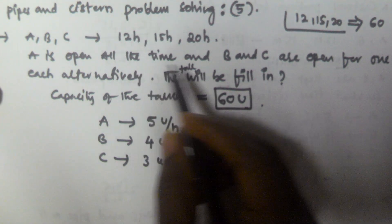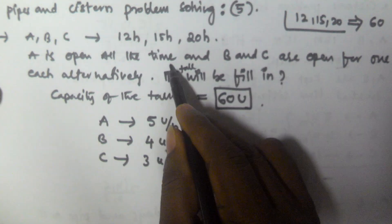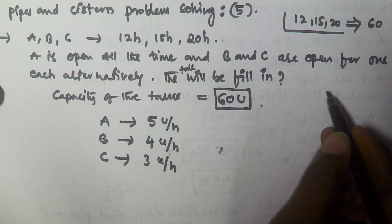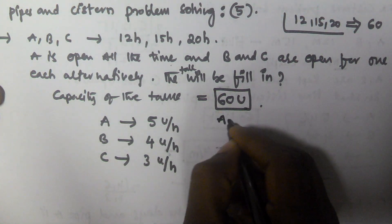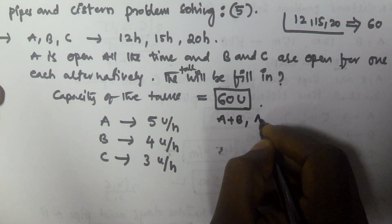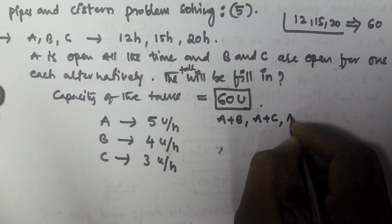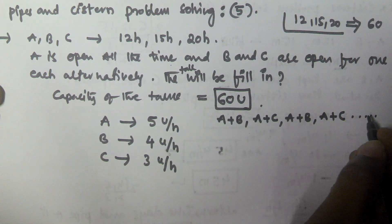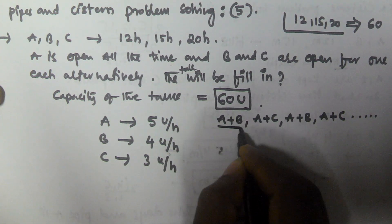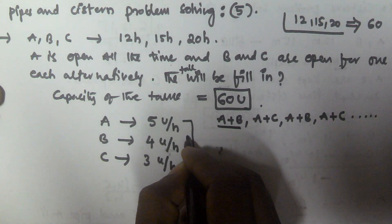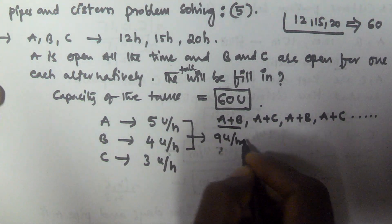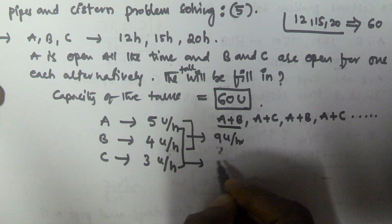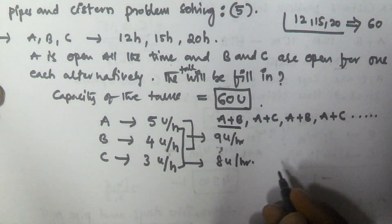A is always open, and B and C are open for 1 hour each alternatively. That means in the first hour A and B are working together, and in the second hour A and C are working together, and so on. So A and B together can finish 9 units per hour, and A and C will finish 8 units per hour.